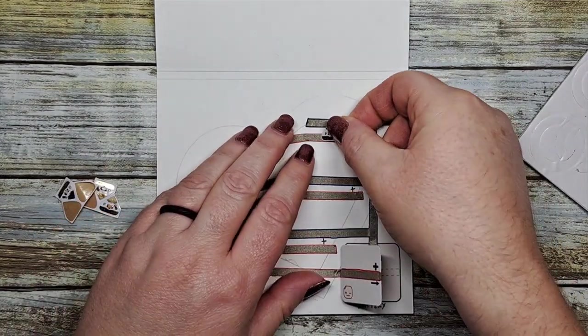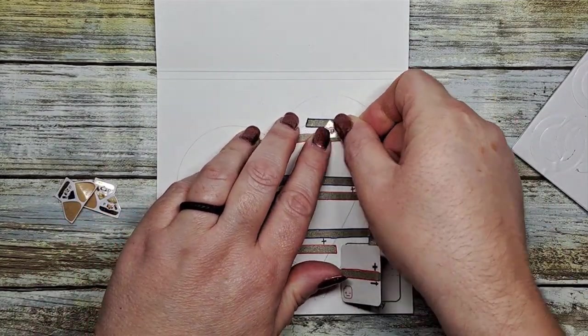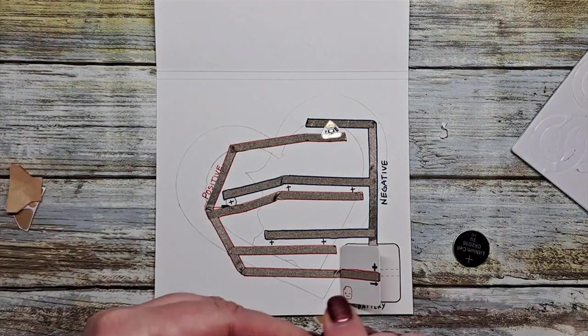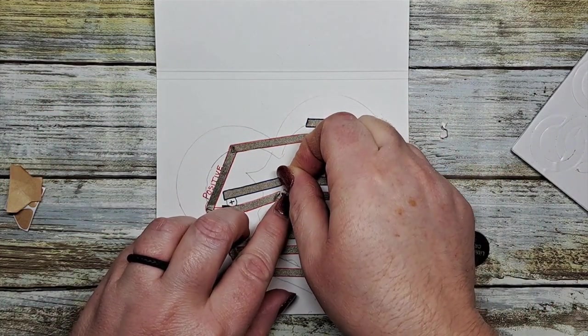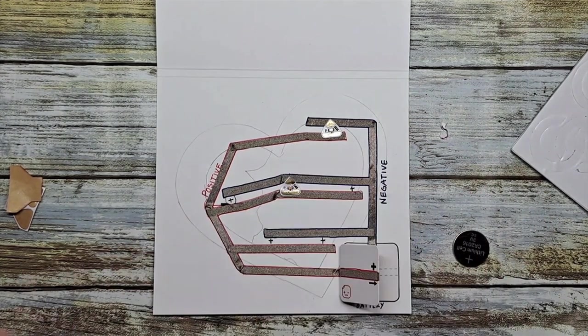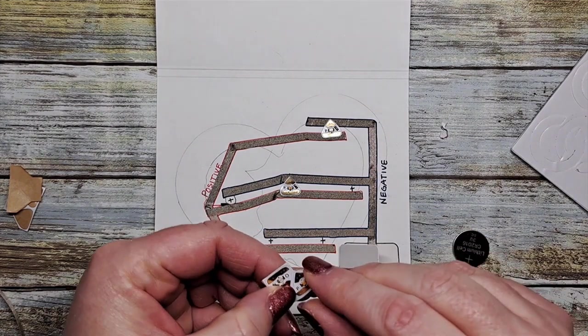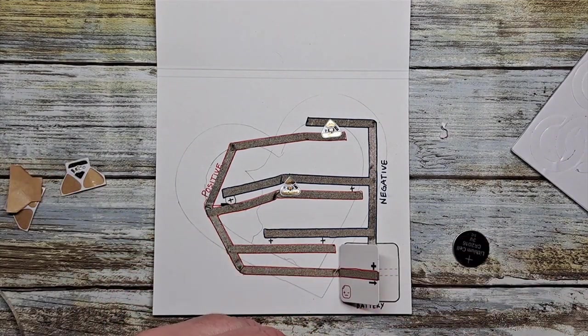It's sticker time. We're going to start with our first five pink LED stickers. These stickers are indicated with a P for pink. And all you have to do is peel and stick. Just make sure that the positive side is on the positive lines.